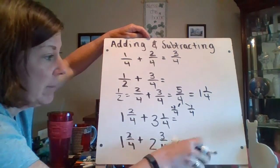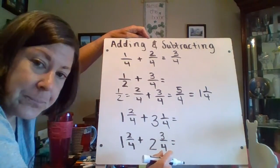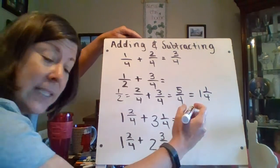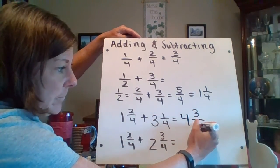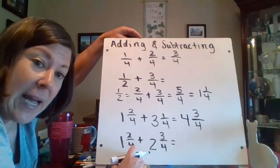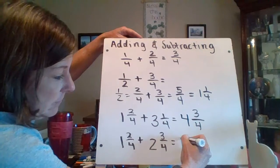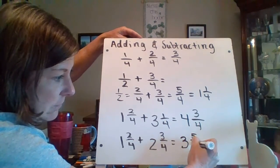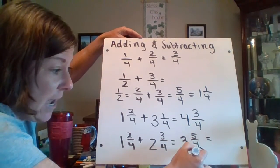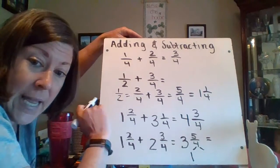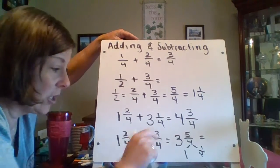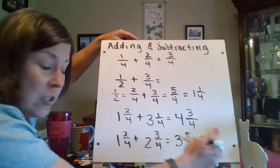Next, I have some examples with mixed numbers. I'm going to add the fractions and the whole numbers, and I end up with 4 and 3 fourths. My next one, I add the fractions and the whole numbers and end up with 3 and 5 fourths. Again, I have an improper fraction. I can pull out a whole — that 4 fourths — and I still have an extra 1 fourth. So my final answer is 4 and 1 fourth.